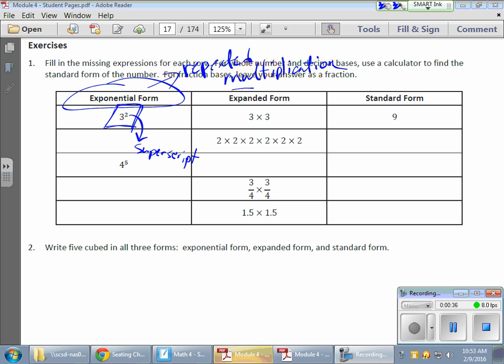So in expanded form, this is what it would look like. We're going to take the 3 and we're going to multiply it by itself two separate times. So here it is, 3 times 3. Here's the first 3, here is the second 3. Now, if we were to evaluate that, we would simply multiply. 3 times 3 gives me 9. So there it is.